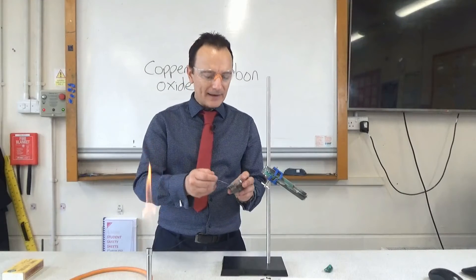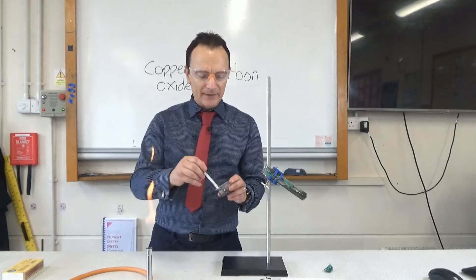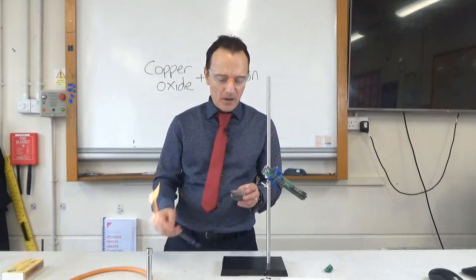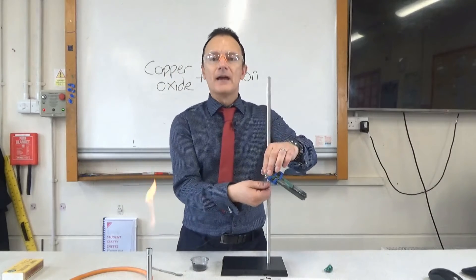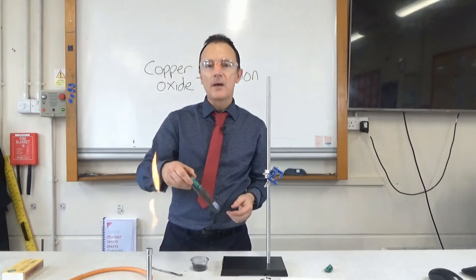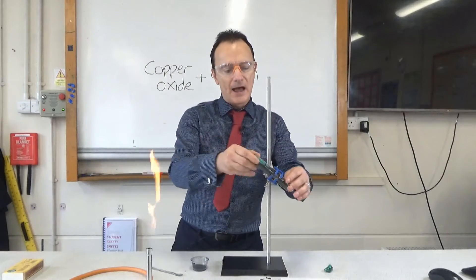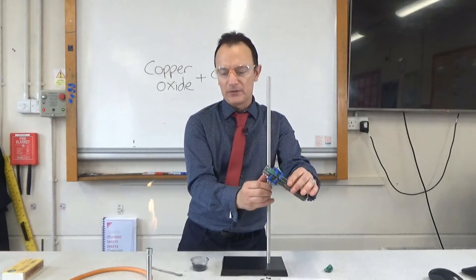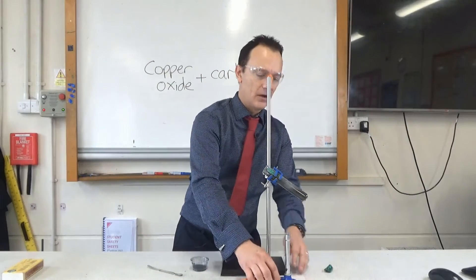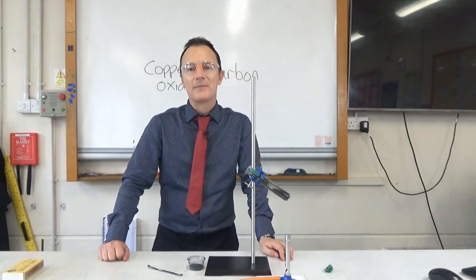So I'm now adding some carbon powder to the black copper oxide. This in itself is a dark grey powder as well. I'm going to give it a good shake up to mix the carbon with the copper oxide and then once again I'm going to heat it strongly with the Bunsen burner, this time for much longer. This is going to take a good 20 minutes half an hour and then we'll come back and have a look at what's happened.